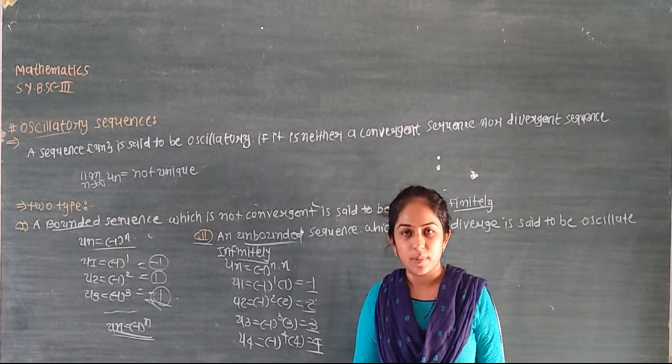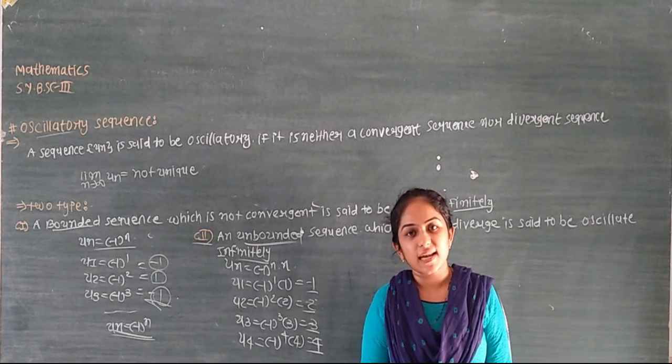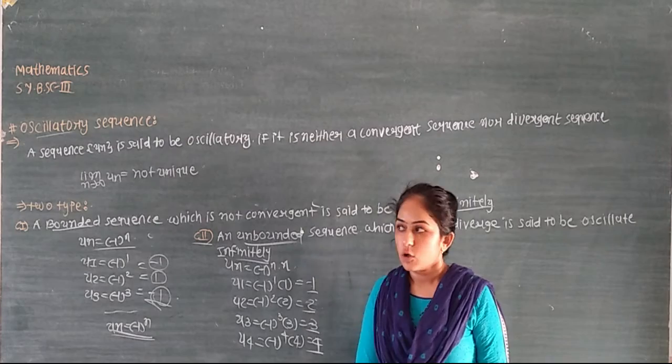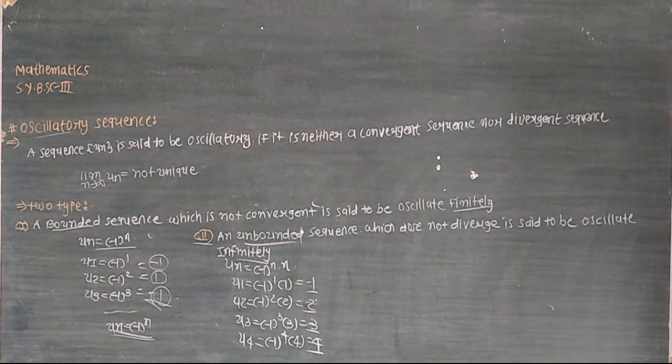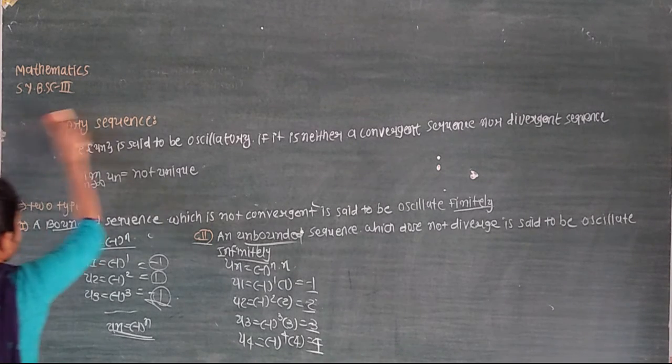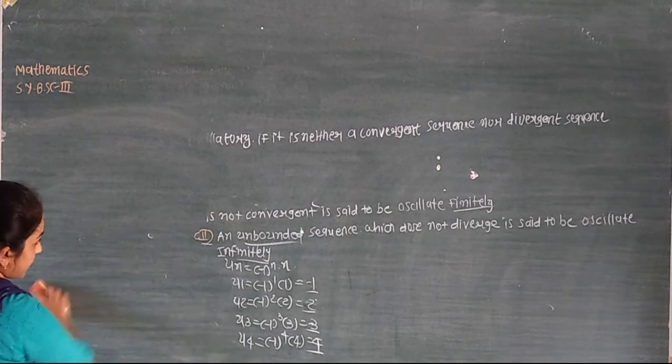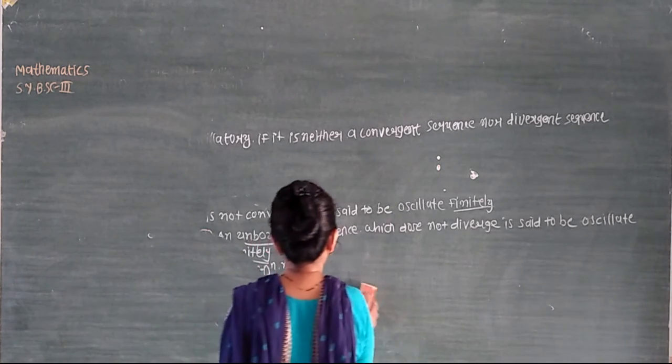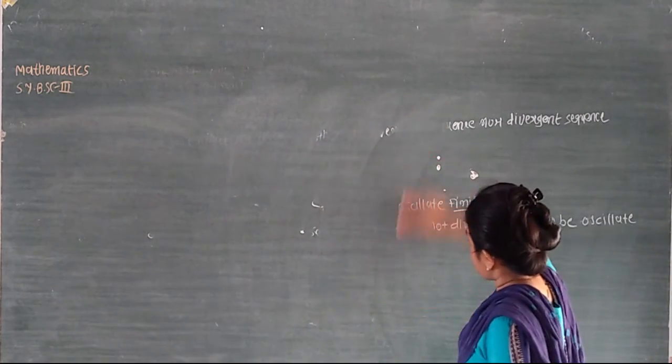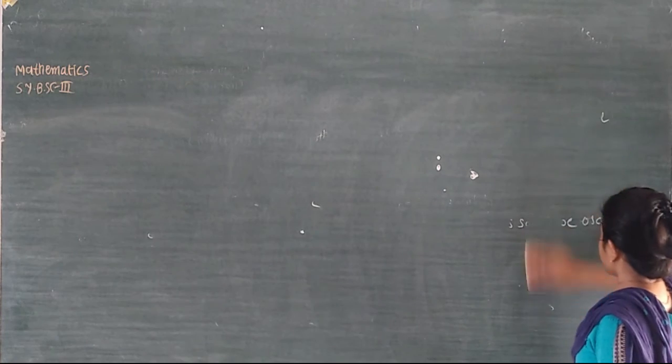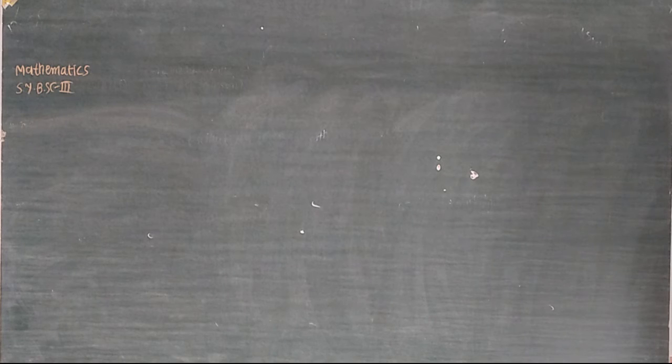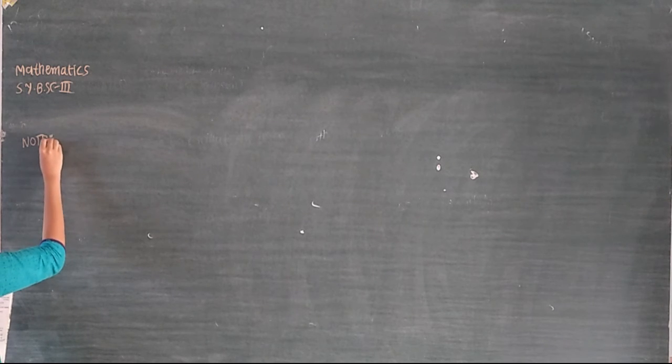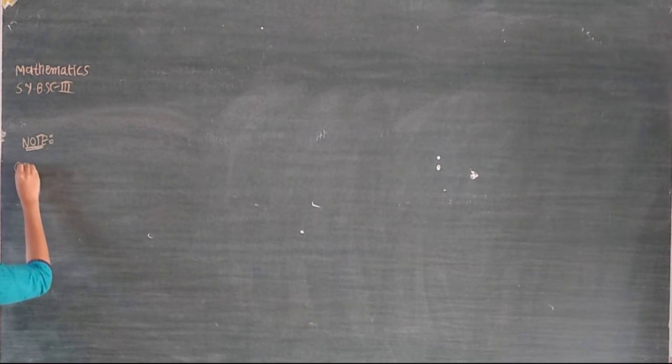In the next lecture we will see more examples. This is the process that we have done. We have done a lot of work. So we see what happens with convergent, divergent, and oscillatory sequences.